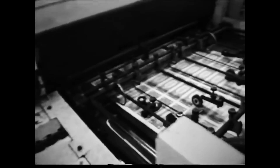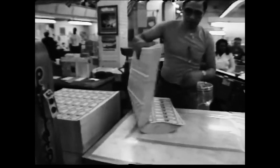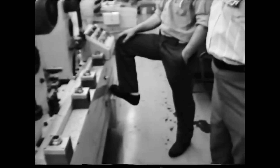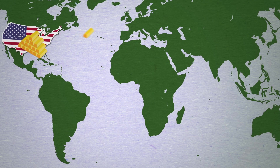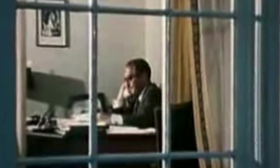However, after World War II, the US had secretly printed dollars that were not backed by gold. Other countries of the world began to suspect this, so they started withdrawing the gold they had stored in the US. The US lost almost 50% of its gold reserves, and the world economy was crumbling.